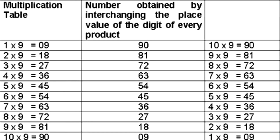Take a close look at the given table. You will observe that the number obtained by interchanging the digits of multiples of 9 is the same as the products obtained when the table of 9 is written in reverse order.